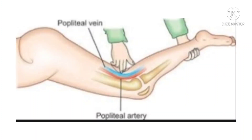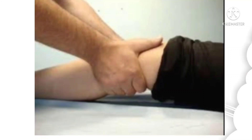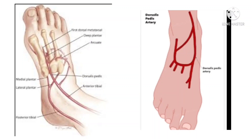The popliteal pulse is one of the pulses you can detect in your body, specifically in the portion of your leg behind your knee. The pulse here is from blood flow through the popliteal artery, a vital blood supply to the lower leg. Several medical conditions can affect blood flow to and from the popliteal pulse.